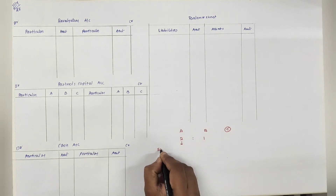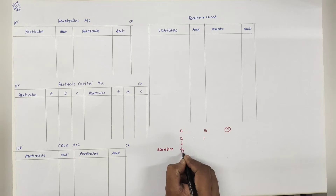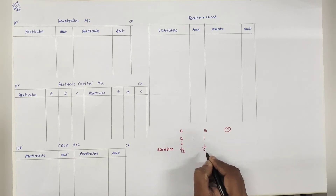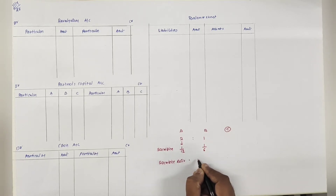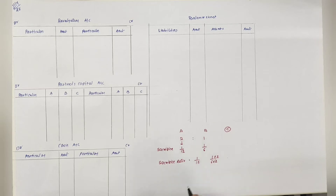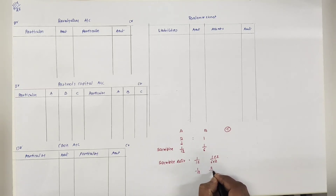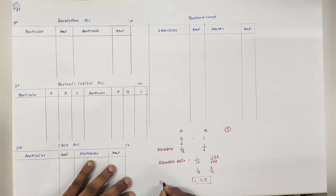तो sacrifice - A का 1/12 और B का 1/6. यहाँ पे sacrifice ratio चाहिए. दोनों की divide amount same करने के लिए B को 2 से multiply करना पड़ेगा. So 1/12 and 2/12 - ratio is 1:2. This is the sacrifice ratio.